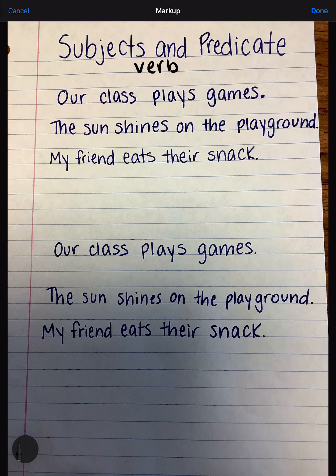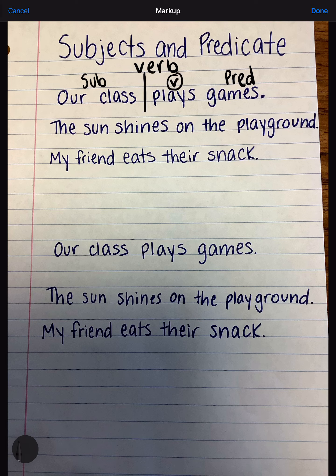Let's look at our first sentence together. It says, our class plays games. What we're looking for is the verb. The verb is the action word. If you can act this word out, you have found the verb. In our class plays games, which word is the verb? I know that plays is the verb. So what we're going to do is draw our line here. The subject is on the left side and the predicate is on the right side. Our class — subject. Plays games — predicate. And we know because we have this verb that signals it.